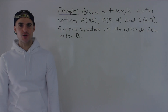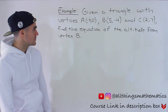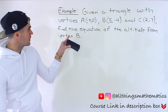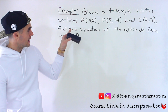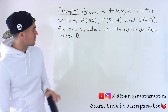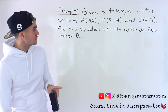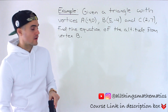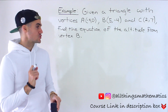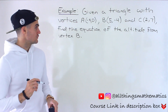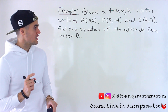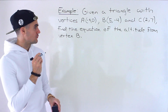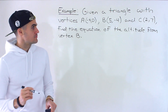Welcome back everyone, Patrick here. Moving on to the next question. Given a triangle with vertices A(-4, 0), B(5, -4), and C(2, 7), we have to find the equation of the altitude from vertex B.